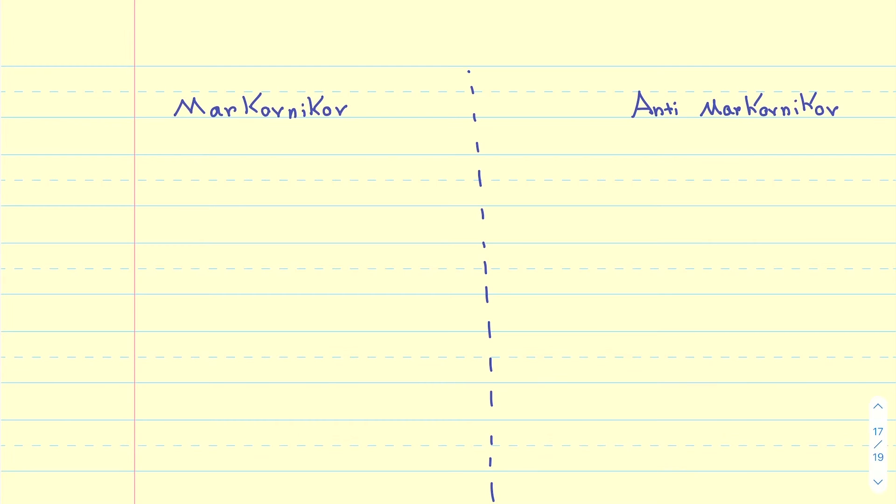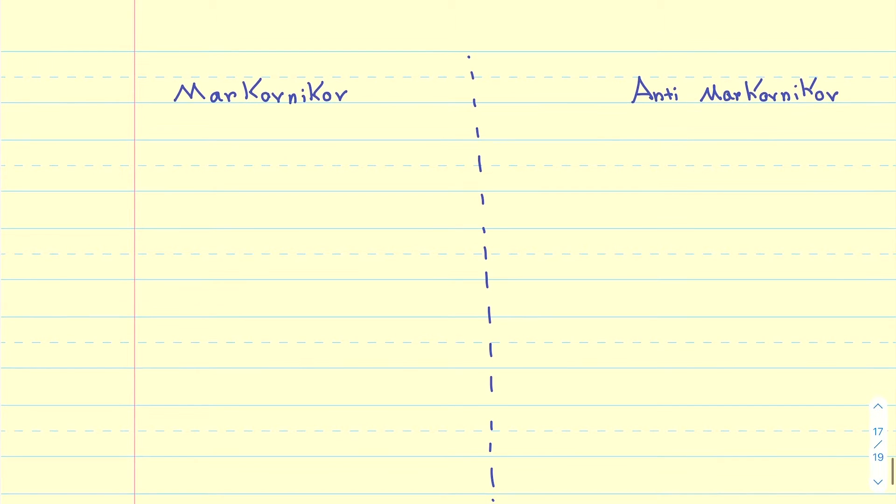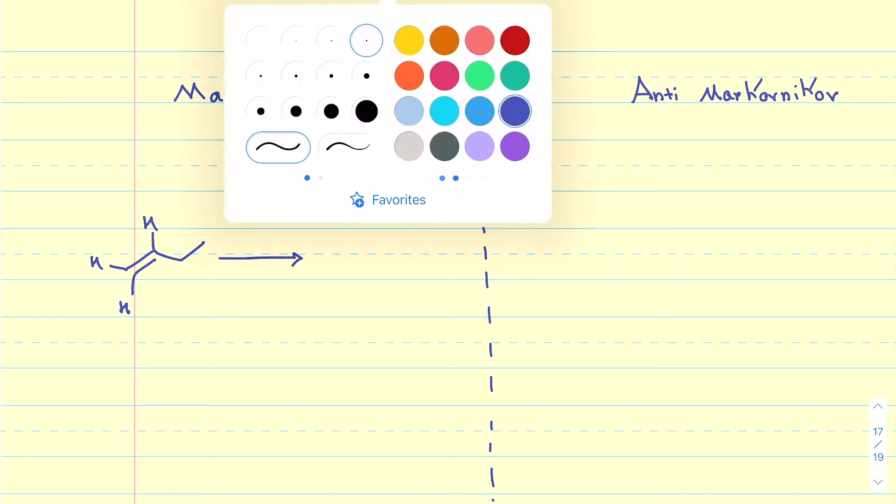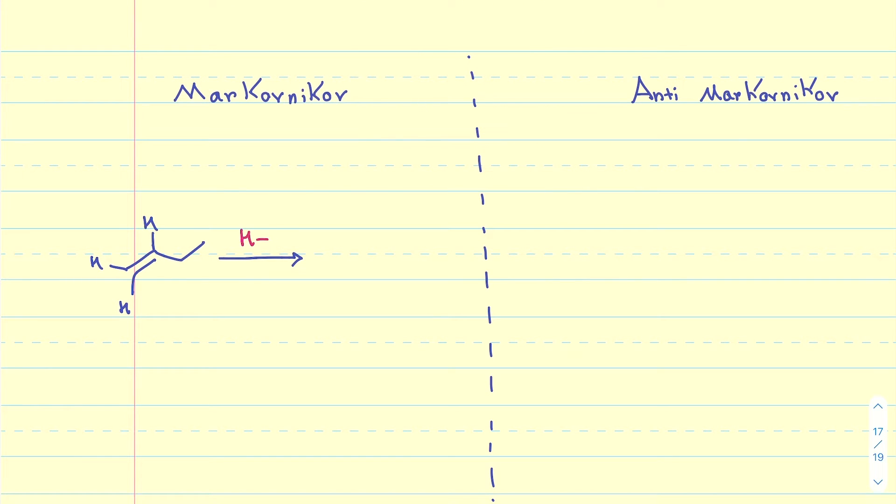All right, in this video, I'm going to be discussing Markovnikov addition versus anti-Markovnikov addition. I'm going to be using the HBR addition to demonstrate this concept. Now, if I take an alkene that is asymmetrical, meaning the two carbons are different - this one has two hydrogens, that other one has only one - and react this with HBR without any other thing present, here's what is going to happen.